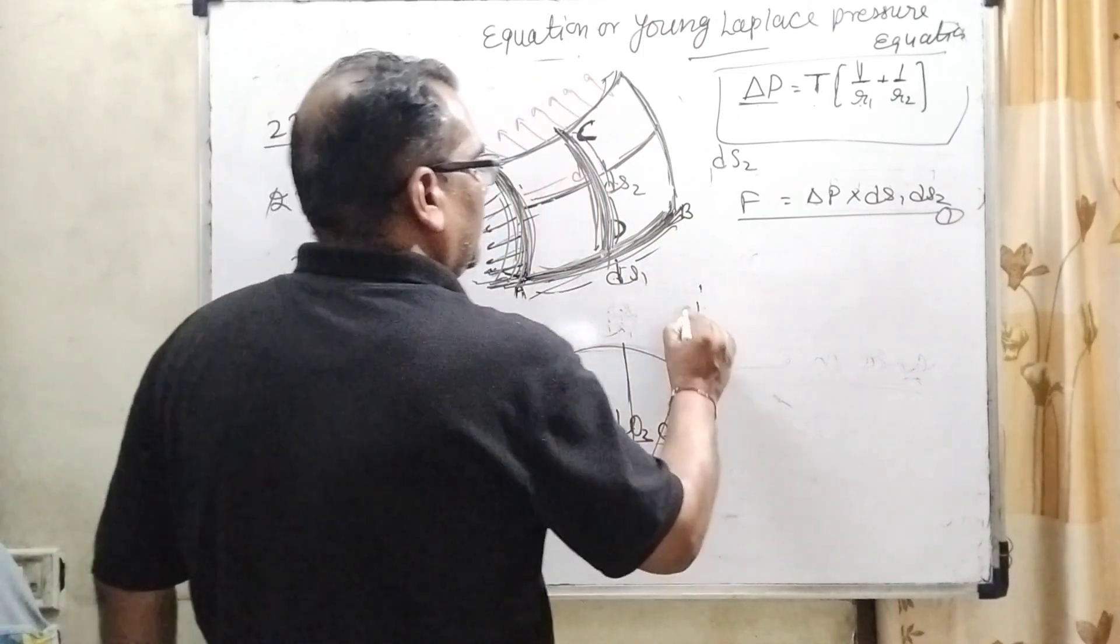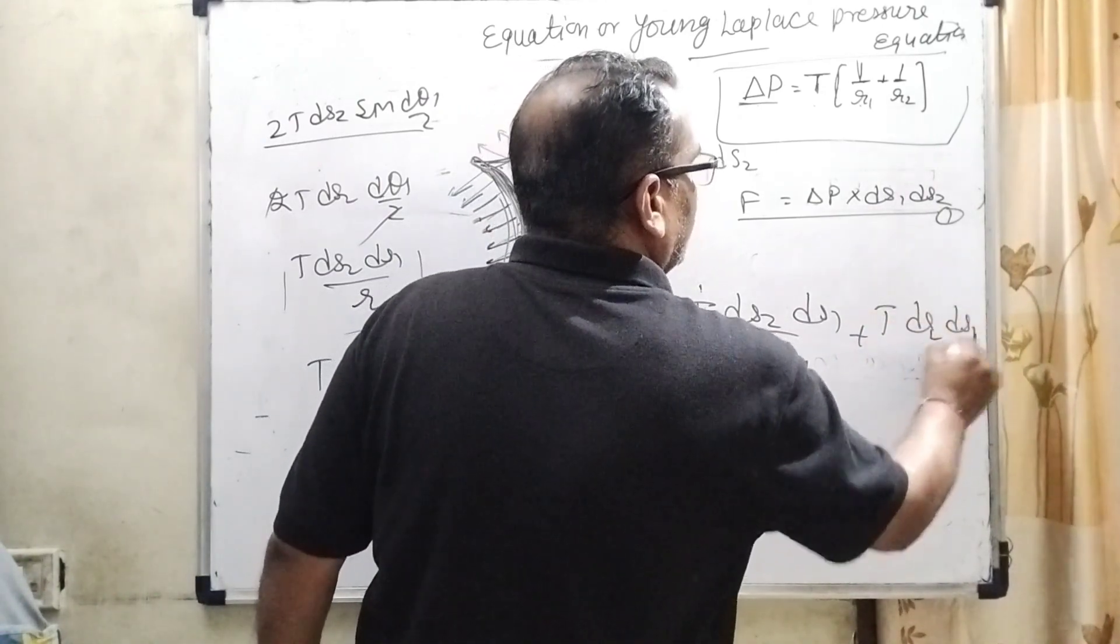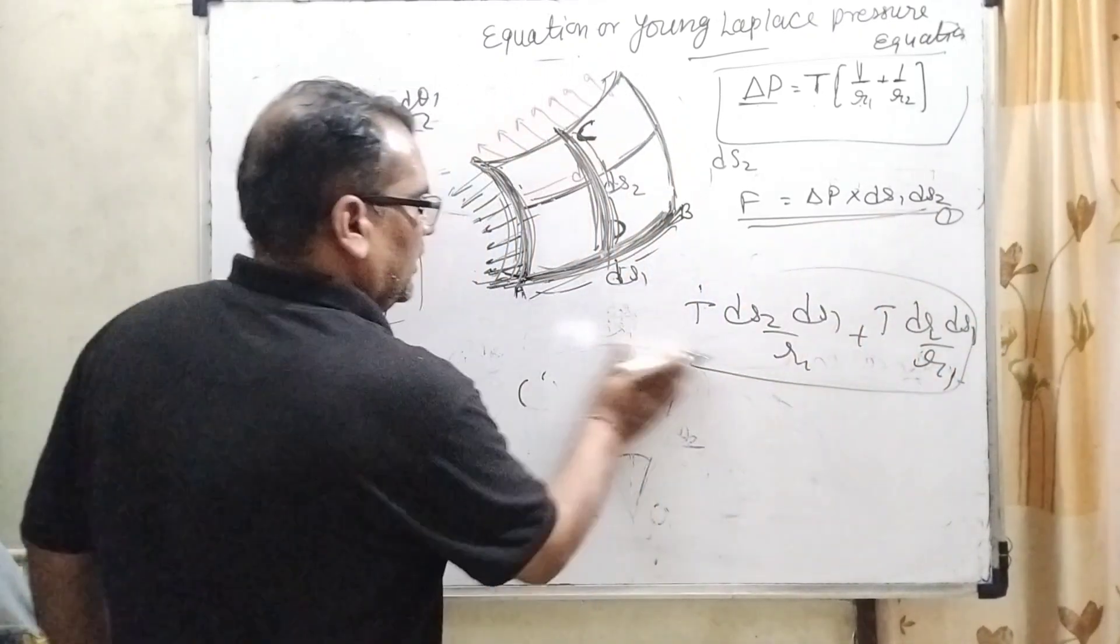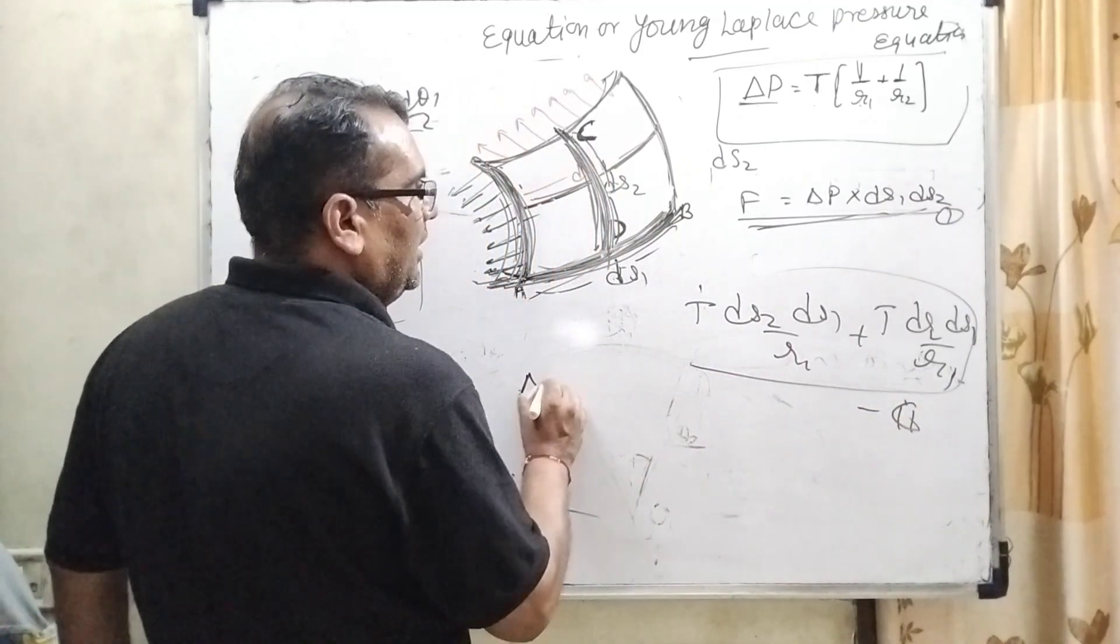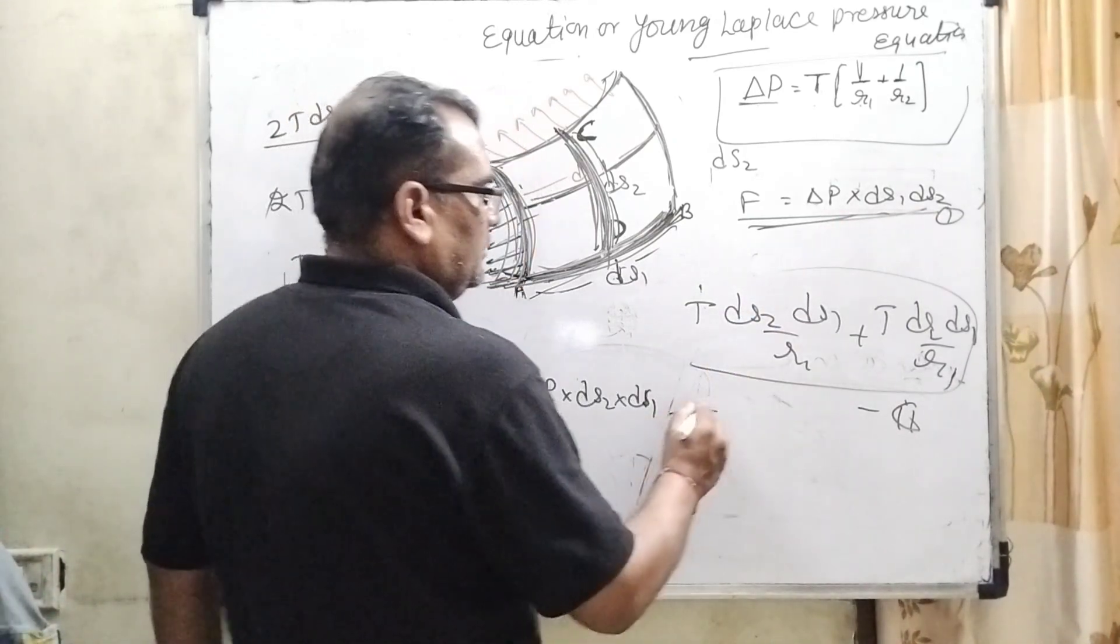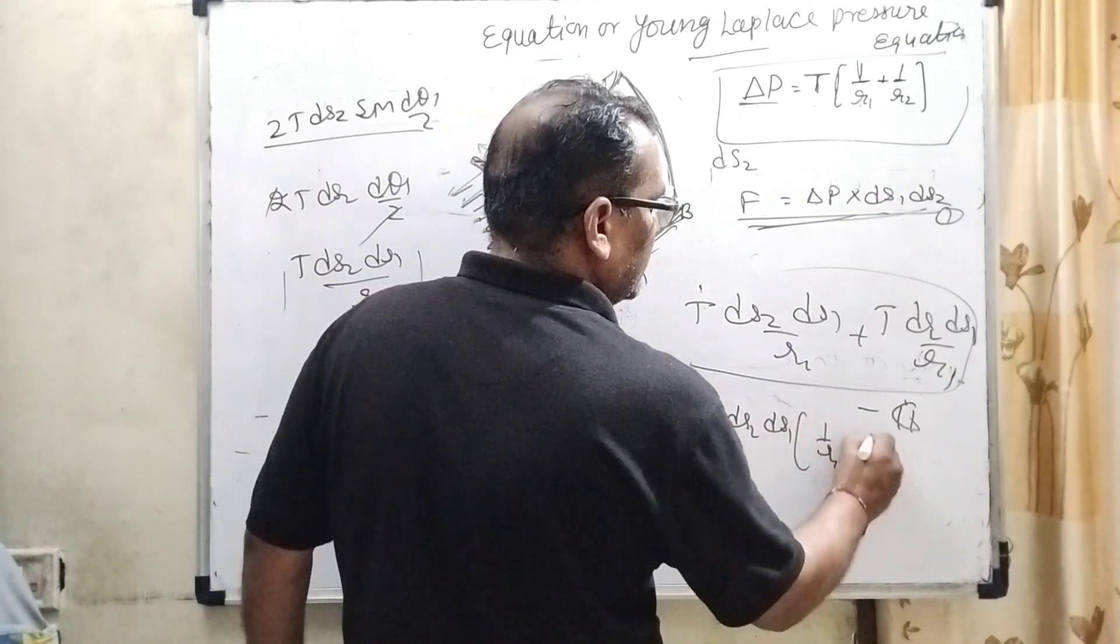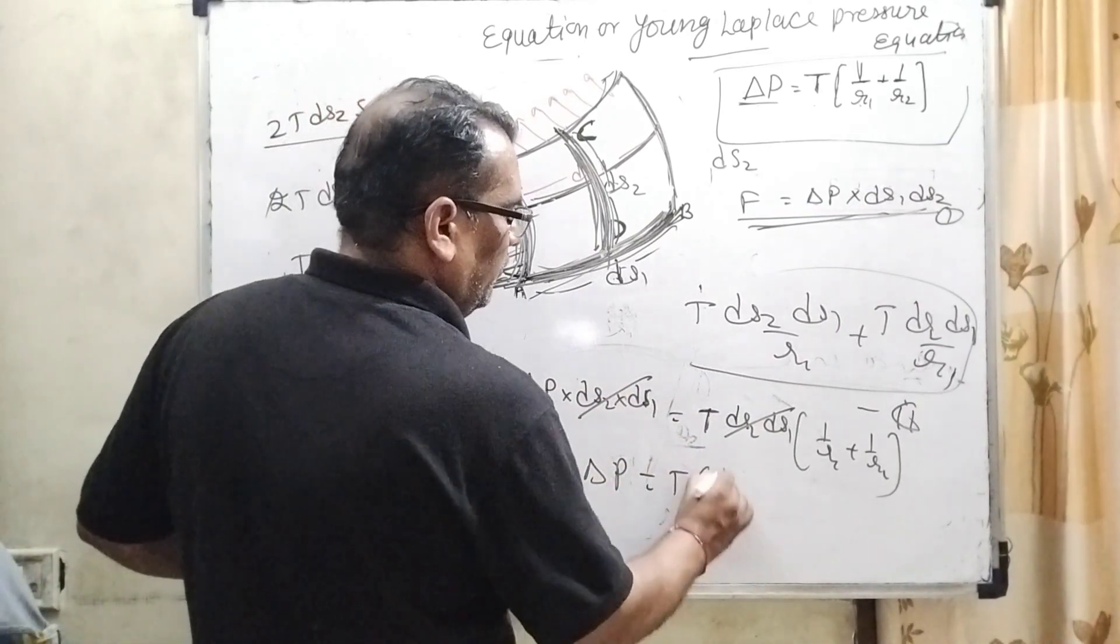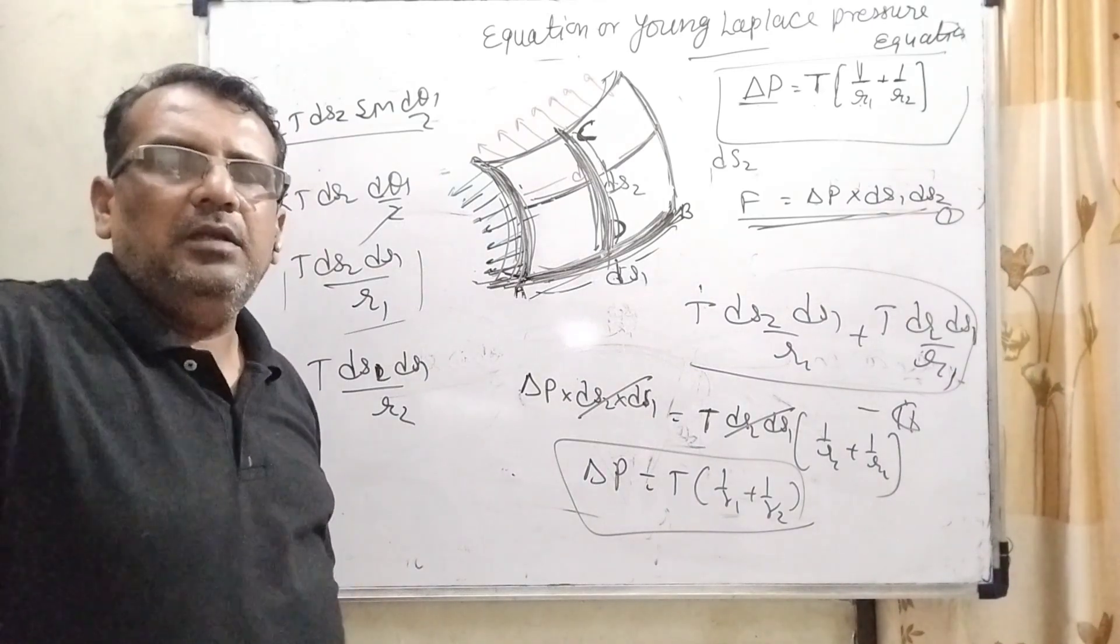Now, net forces equal to T DS2, DS1 upon R1, plus T DS1, DS2 upon R2. This total force is equal to this force. F equals what is the first equation and this equation, equation number two. Now, delta P into DS2, DS1 equal to T. DS2 and DS1 get common: 1 by R1 plus 1 by R2, and DS1, DS2 cancel out. Delta P equal to T into 1 by R1 plus 1 by R2. This is the Laplace equation, or Young-Laplace pressure equation.